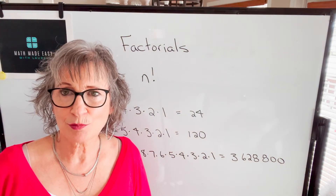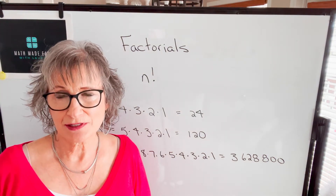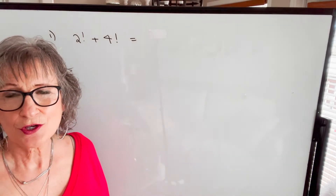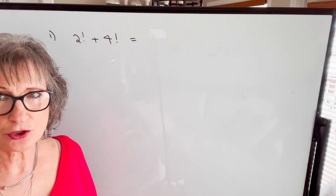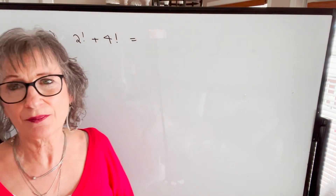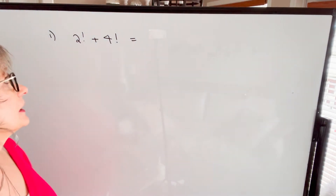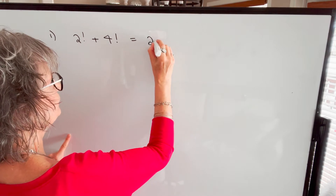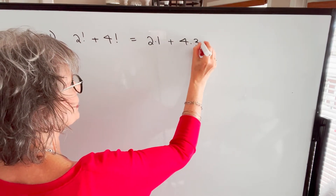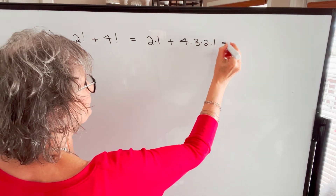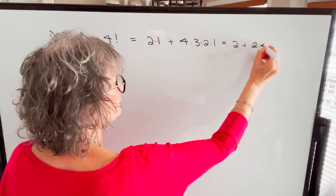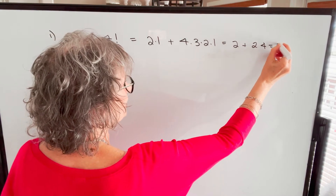You may be asked to do certain operations with factorials, so let's take a look. If you're adding or subtracting factorials, there really aren't any shortcuts you can use. You're just going to have to calculate each of these factorials and then do the addition or subtraction. For example, 2 factorial is 2 times 1, and 4 factorial is 4 times 3 times 2 times 1, so 2 plus 24 equals 26.